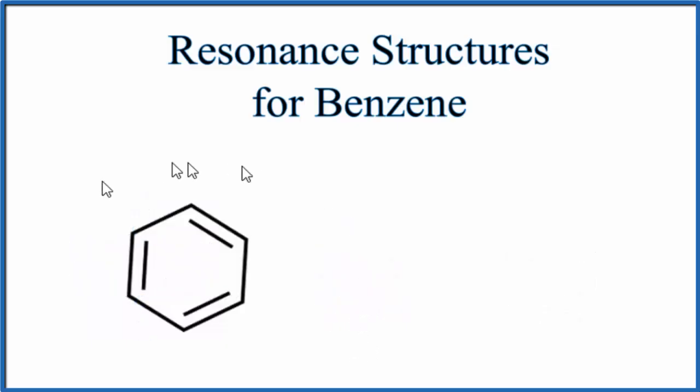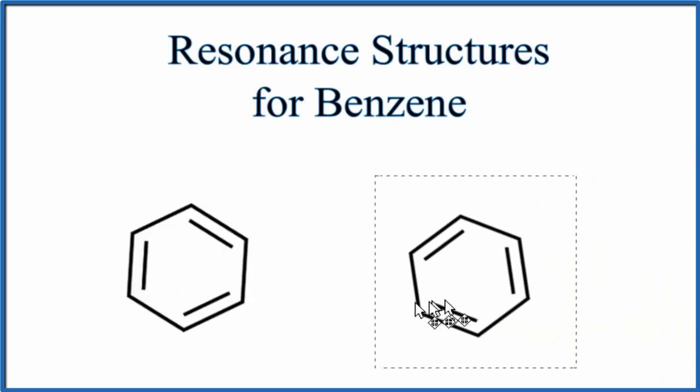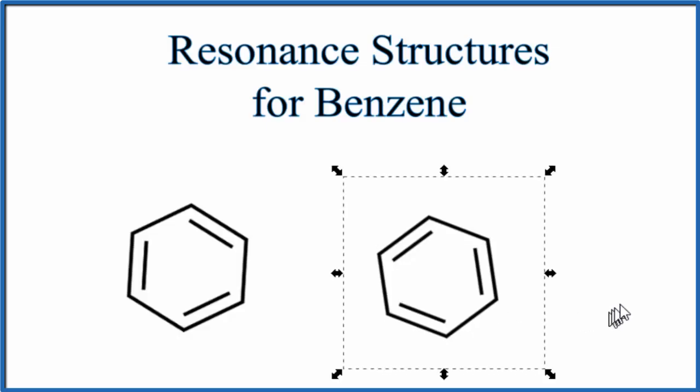So you might ask, when we draw this, can we put the double bonds here, here, and here, and have them alternating in that manner? And yeah, we can do that. It looks something like this. So instead of a single bond, we have a double bond. Instead of a double bond, we have a single bond.